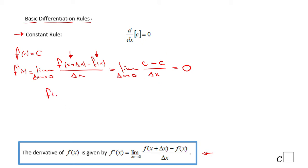So this is a short proof of the constant rule. For example, if you have f(x) = 7, the derivative will be zero. If you have y = pi, which is a number, y prime will be zero.